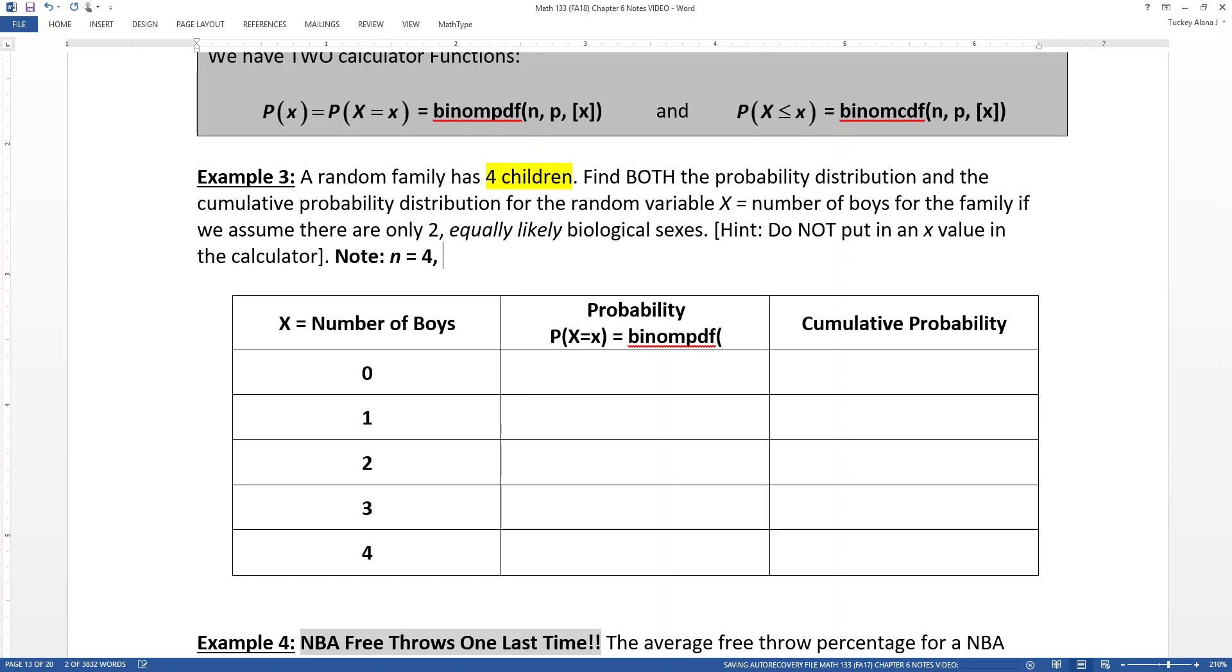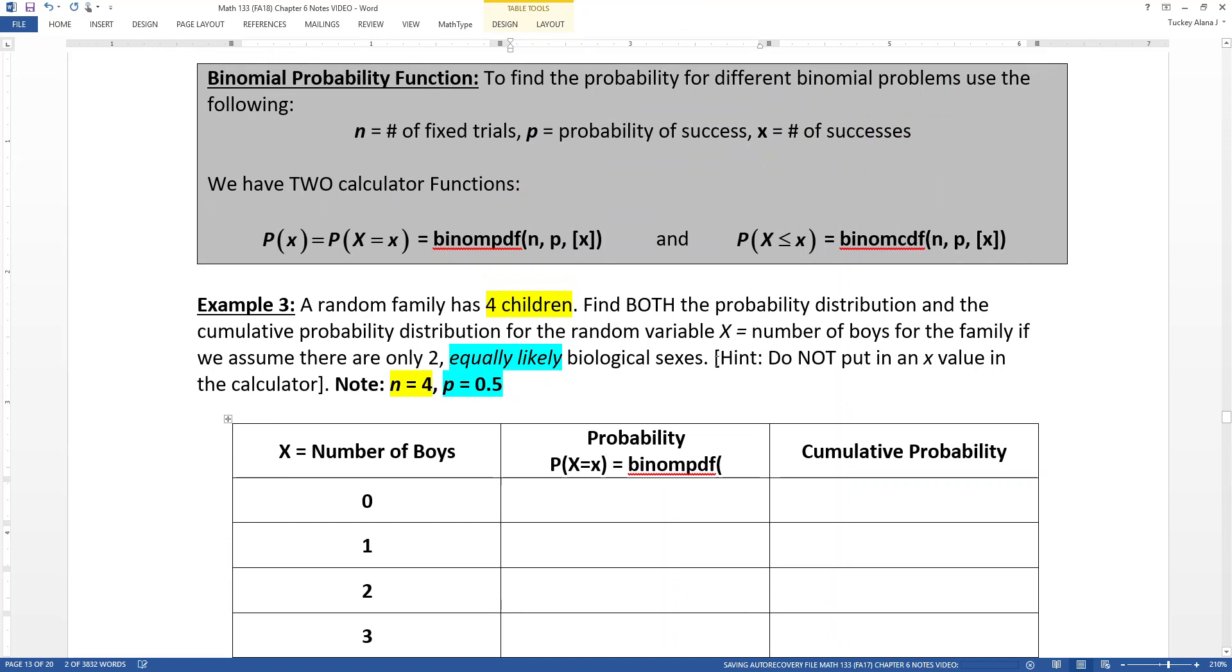Which was assumed equally likely biological sexes is right there. So that's telling us that we assume that 0.5 is our probability of success. Those words equally likely mean that we assume 0.5, and this word, four children up at the top lets you know that it's N. So according to this table, what I can do is I can actually type 4, 0.5.